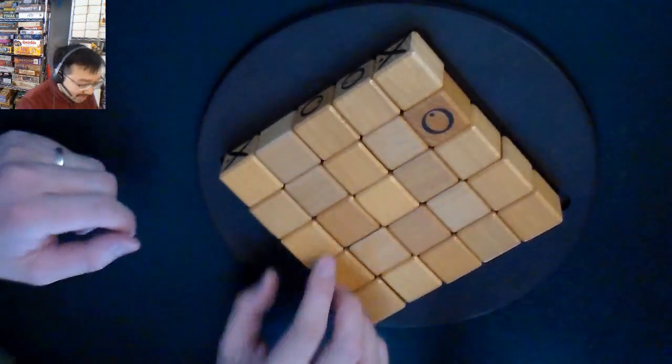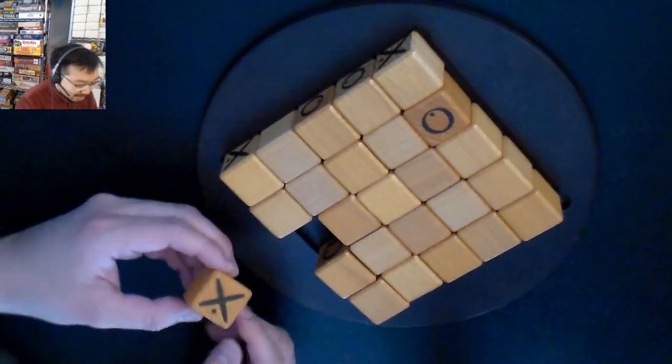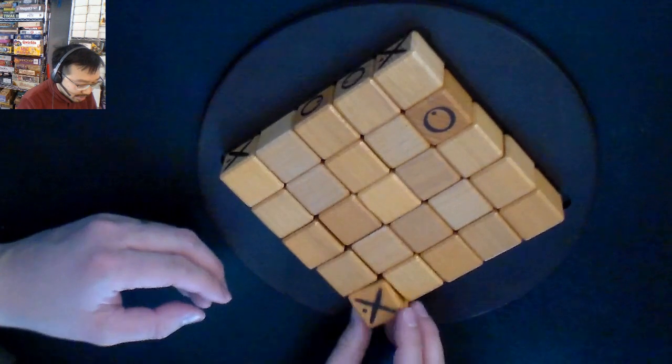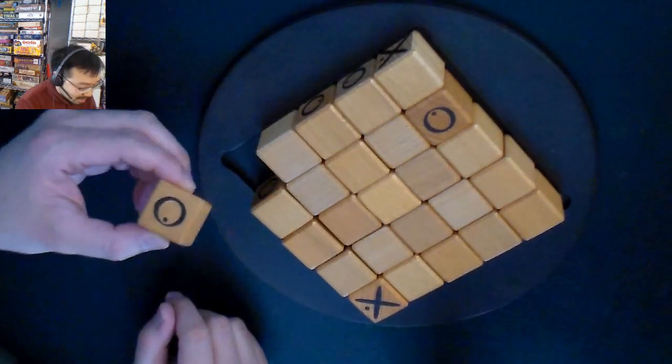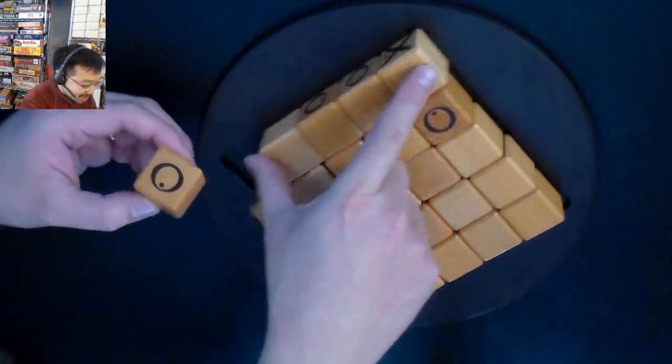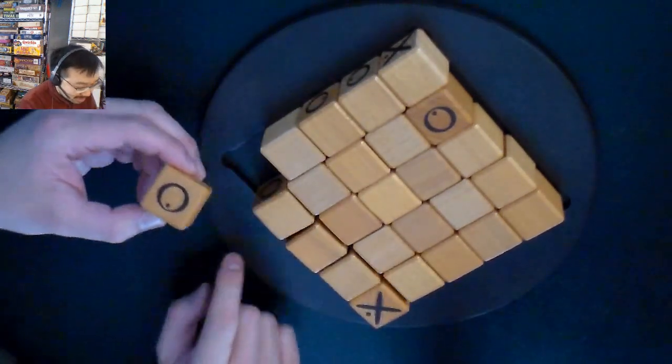So now let's pretend it's X's turn. They'll grab this. They can choose to put it in one of those three spaces that it creates. If you happen to grab a corner, there's only two options. You're either sliding this whole thing or sliding this whole thing.